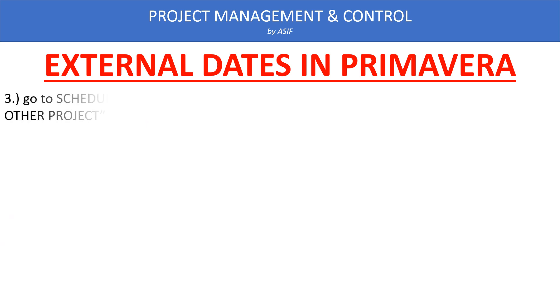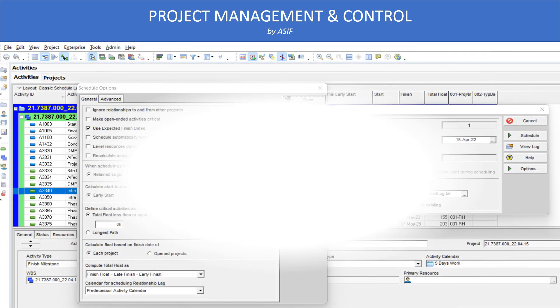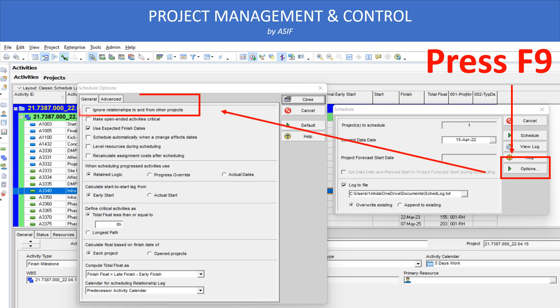In addition to this, we have to protect our program from external dates. You have to go to the Schedule option and press Options. In the Options dialog, there is a General tab. In the General tab, you have to click the option 'Ignore relationships to and from other projects,' as explained in the diagram here. When we press F9, the schedule dialog box will open and we click the Options button, which opens the Options tab where we select the General tab and click that setting.